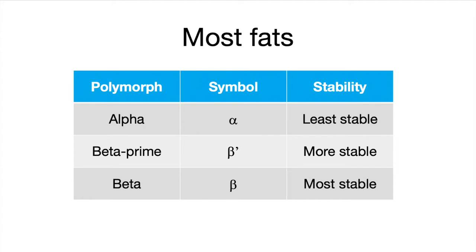The problem with cocoa butter is not the fact that it's polymorphic, because most fats are actually polymorphic. A typical fat has three different polymorphs, which we call alpha, beta prime, and beta. These different polymorphs have different melting points, different stabilities, and different characteristics. So for a typical fat, we would see it have these three different polymorphs.